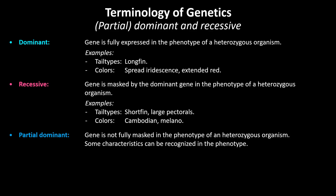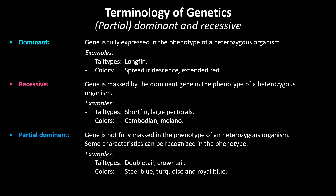We speak of partial dominance when a gene is not fully masked in the phenotype of a heterozygous organism, and some characteristics of the trait can still be recognized in the phenotype. Some examples of partial dominant traits in show bettas are double tail, crown tail, and the classical iridescent colors steel blue, turquoise, and royal blue.